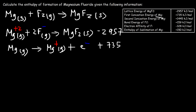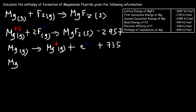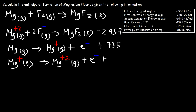Now let's move on to the second ionization energy of magnesium. We start with the Mg⁺ ion and remove another electron from it, producing the Mg²⁺ ion, still in the gaseous state, with another electron removed. The energy change for this reaction is +1,445 kJ/mol.